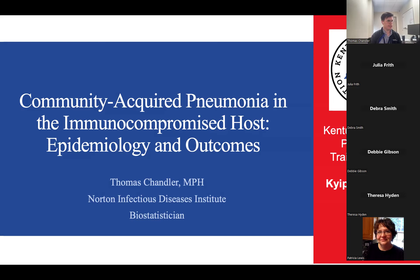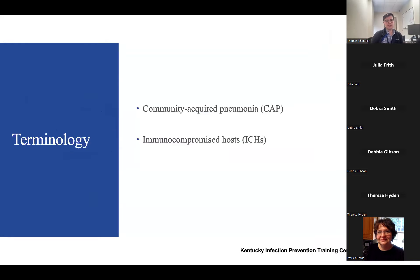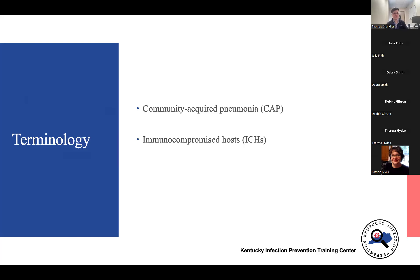For today's presentation, we are going to go over community-acquired pneumonia in the immunocompromised host, specifically epidemiology and outcomes within this population. The results I'm going to present today are from a study I worked on with principal investigator Dr. Ramirez. Just to get us started, I'll throw out some terminology. We love a good acronym in medical research — CAP is community-acquired pneumonia, and ICHs refers to immunocompromised hosts.